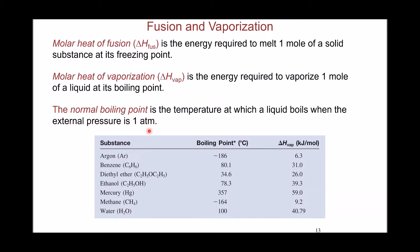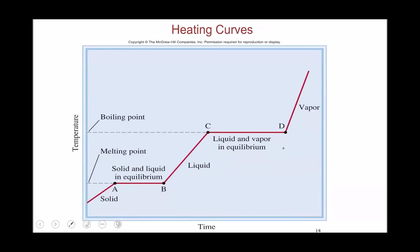If the external pressure changes from one atmosphere, you will have a different boiling point — that is not the normal boiling point. These boiling points are proportional to the intermolecular interactions expected in the substance, as covered in chapter eight. The higher the intermolecular force, the higher the boiling point, and also the higher the amount of heat needed for vaporization to take place.